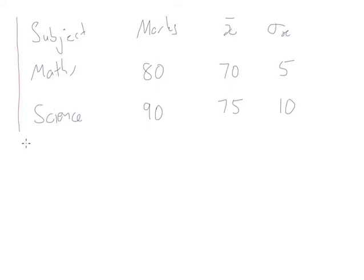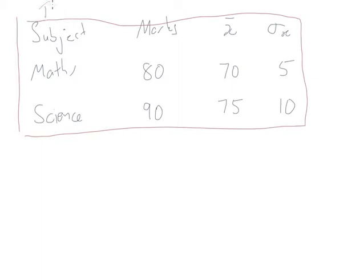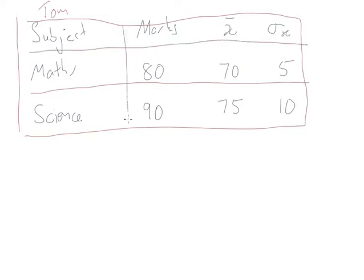So given this, the classic standard deviation question is: on which test did Tom do better — maths or science? The classic response is he's done better in science because his mark is higher. But standard deviation says this is not always actually true. We're concerned with how many standard deviations Tom is above the mean in each case.